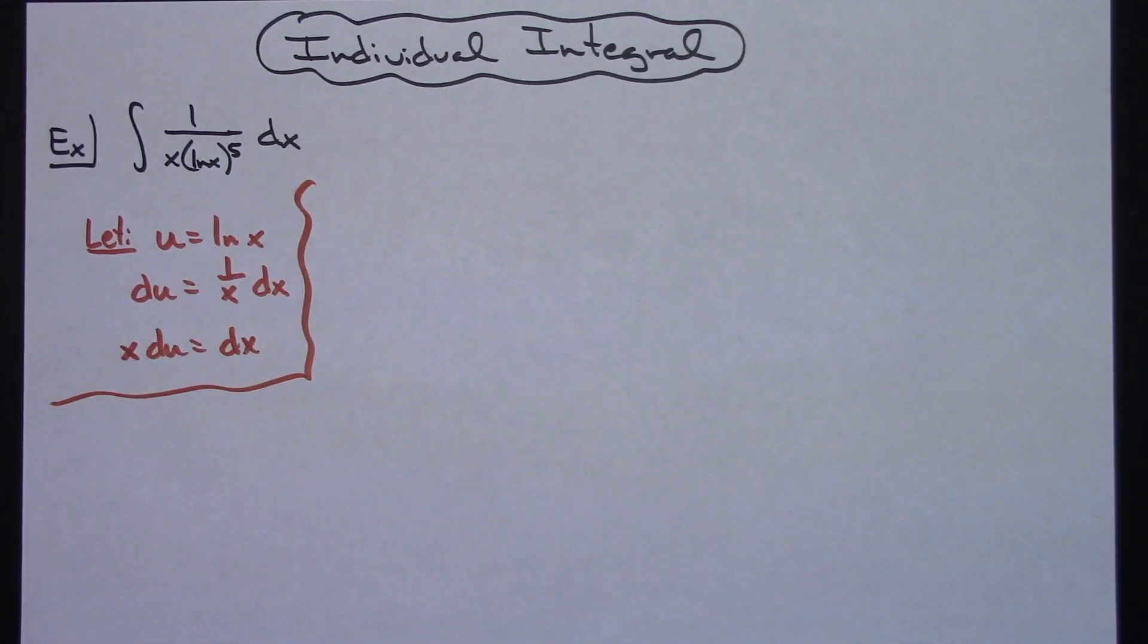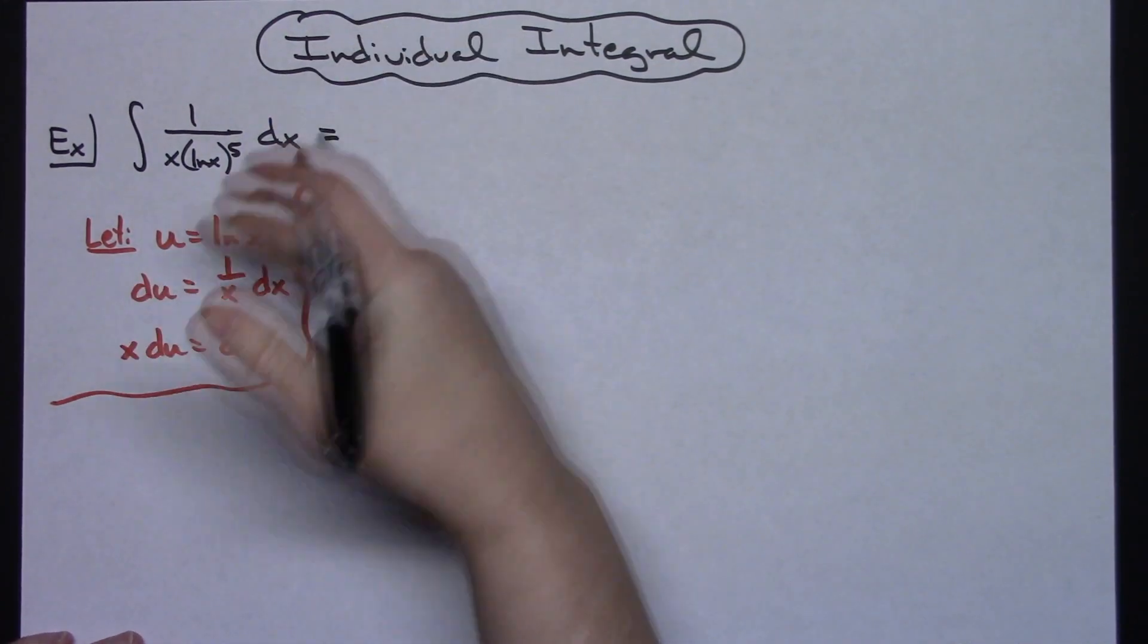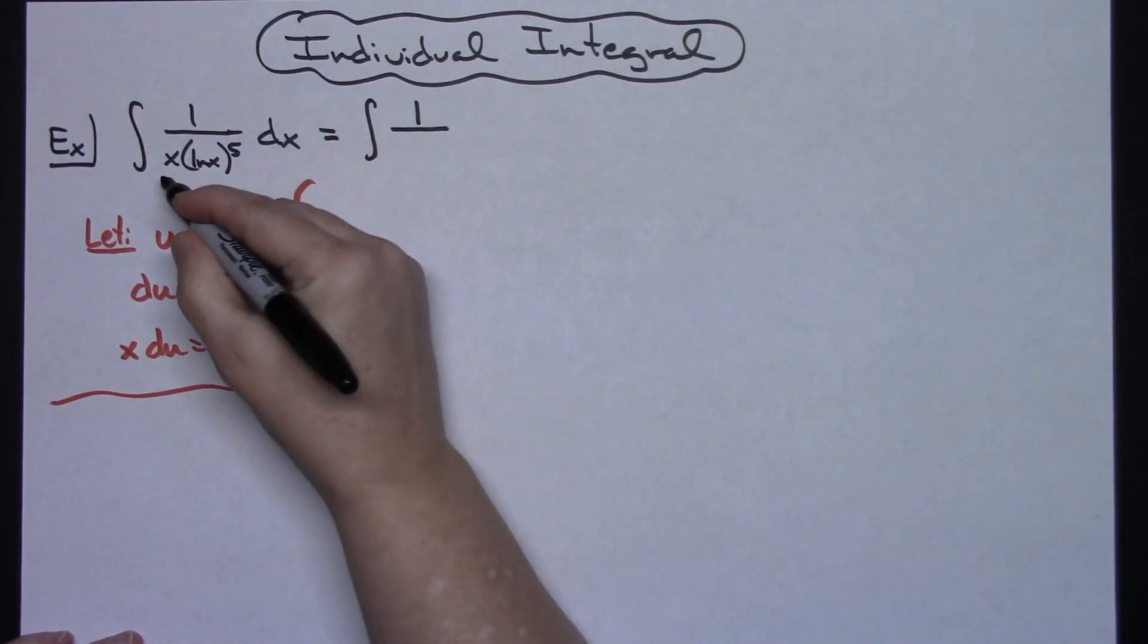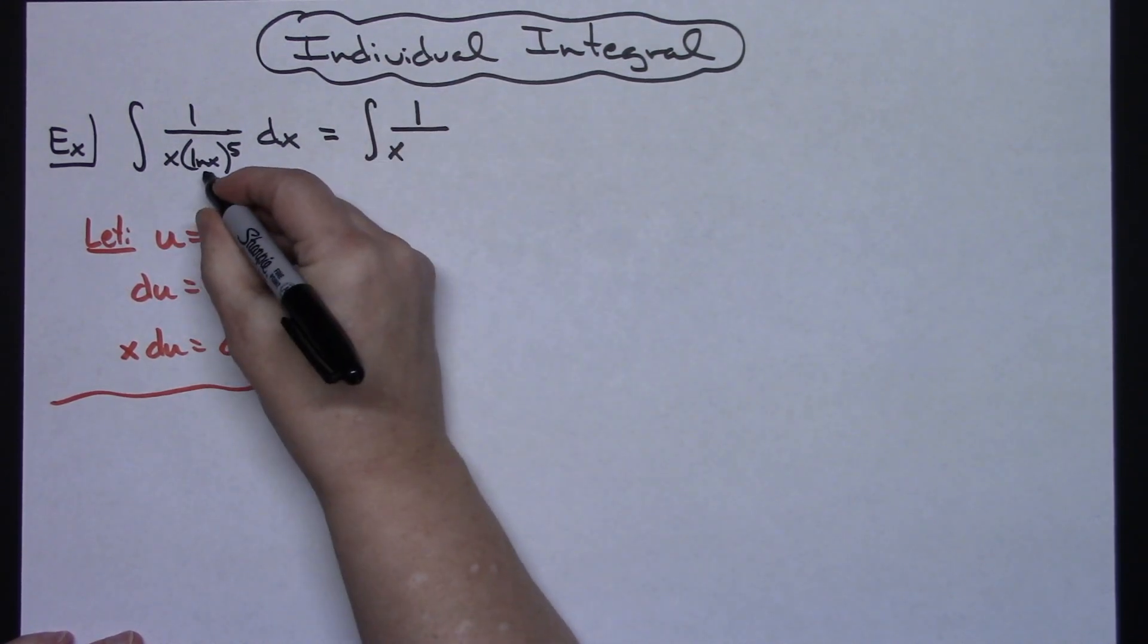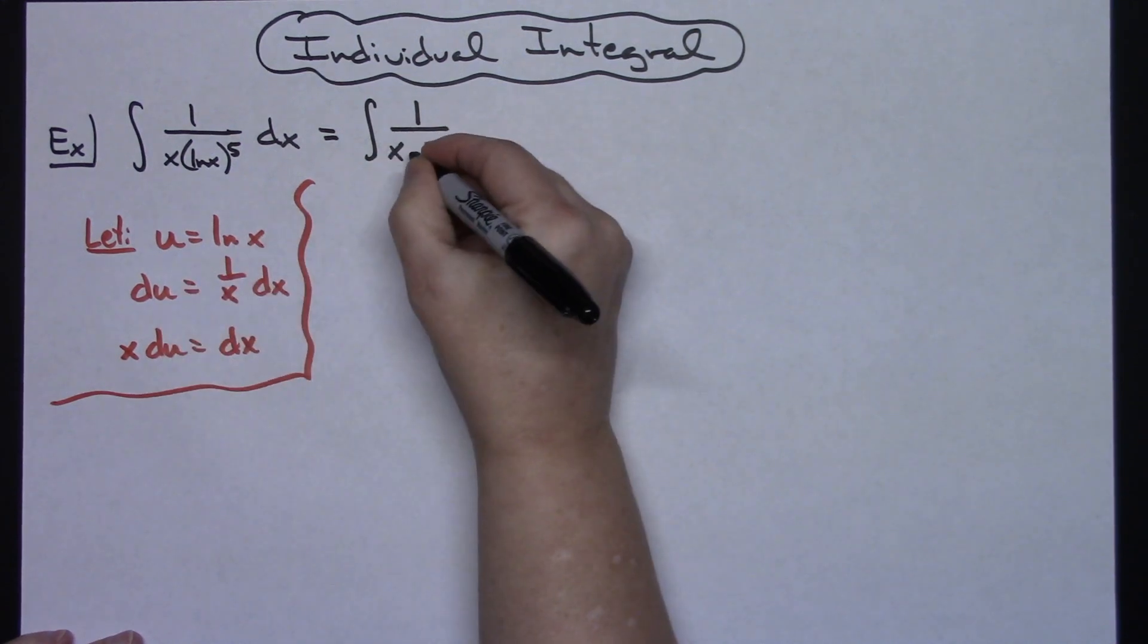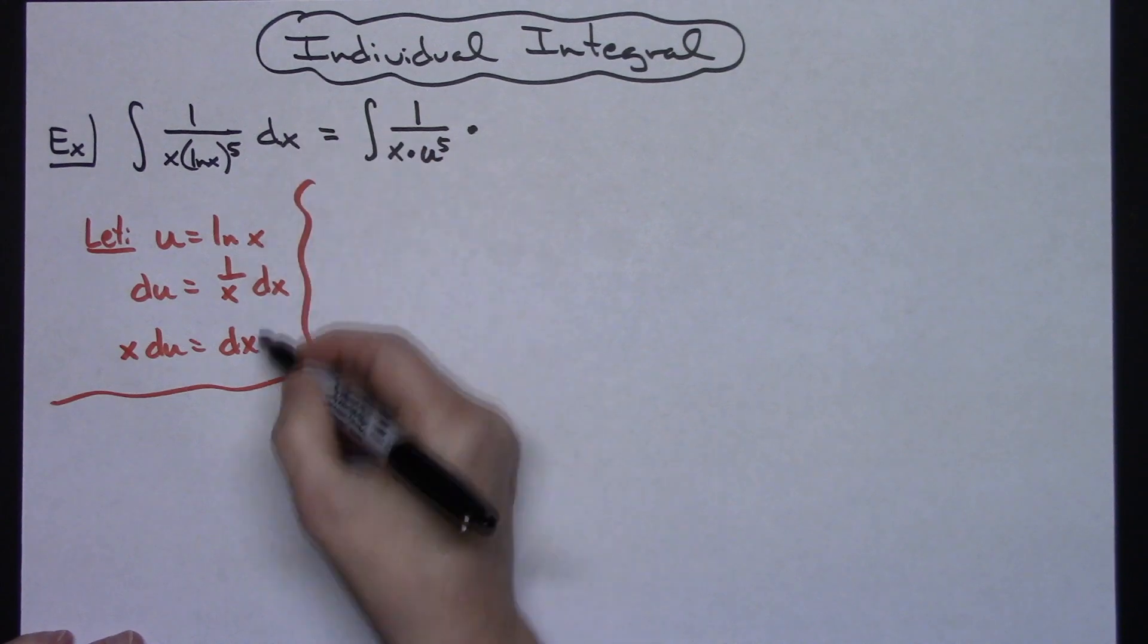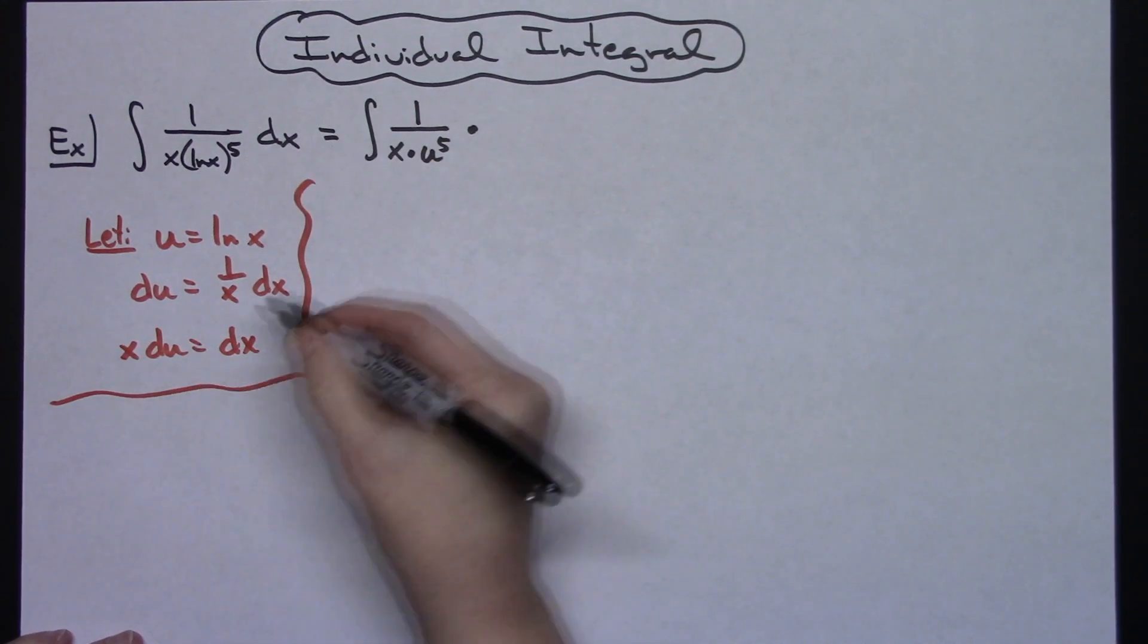Okay then I'm going to come back up to this original integral and I'm going to start substituting things. So I'm going to have the integral of 1 over x stays put. The natural log of x is going to be replaced with a u. So I'll have u to the fifth power and the dx is going to get replaced with x du.